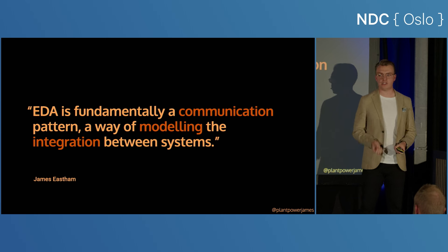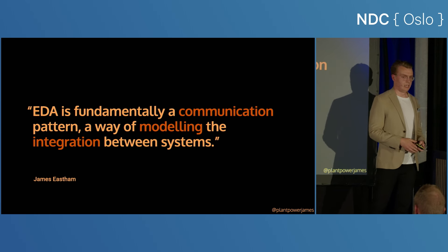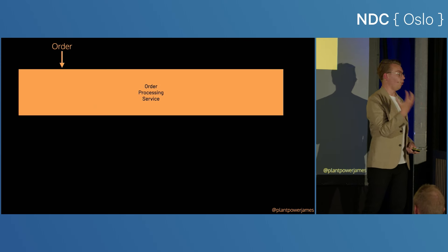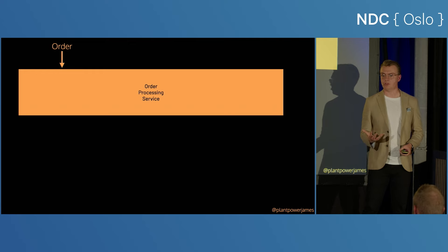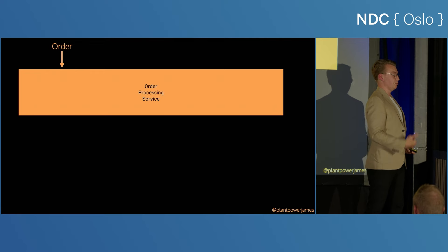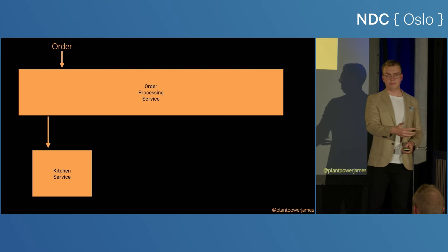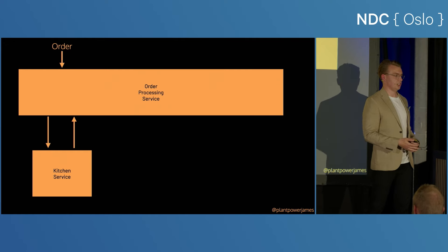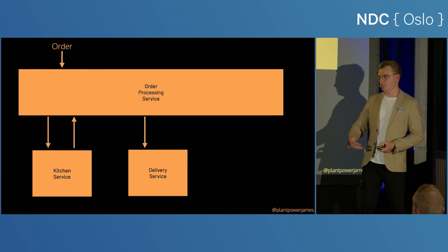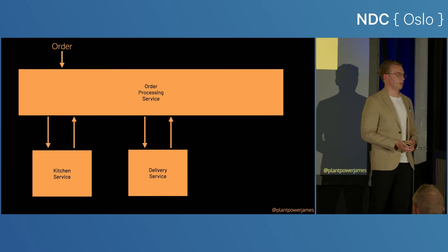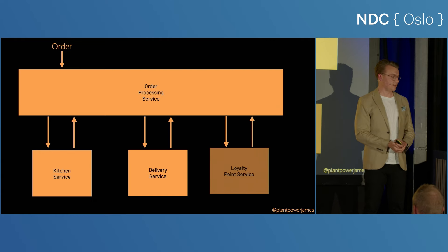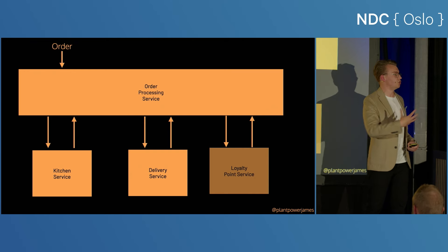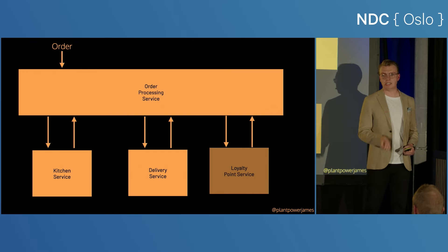Let's get more technical and work through the implementation. We'll start with the core order processing flow — this is the bit we're going to make event-driven. Here's how it works today: an order comes in and the order service calls the kitchen. At some point later, the kitchen calls back and says the order is ready to be delivered. The order processing service calls the delivery service; the delivery service responds when it's been delivered, then the call goes out to the loyalty service. Look at how much coupling and synchronous communication you've got just for this simple piece of the architecture.